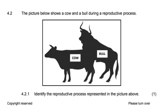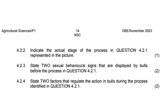State two sexual behavioral signs displayed by bulls before mounting. Bulls might follow the cows, they will excitedly approach the cows that are in oestrus. They will start sniffing or licking the external genitalia or the urine of the cow that is on heat or in oestrus. Those are the two major behavioral signs.